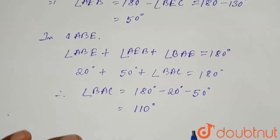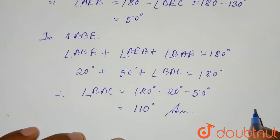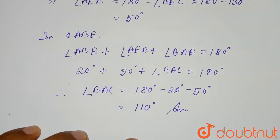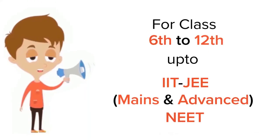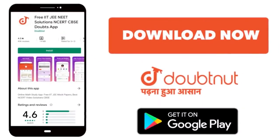So angle BAC is 110 degrees, and this is the required solution for this question. Thank you. For class 6 to 12, IIT JEE and NEET level, trusted by more than 5 crore students — download Doubtnut today.